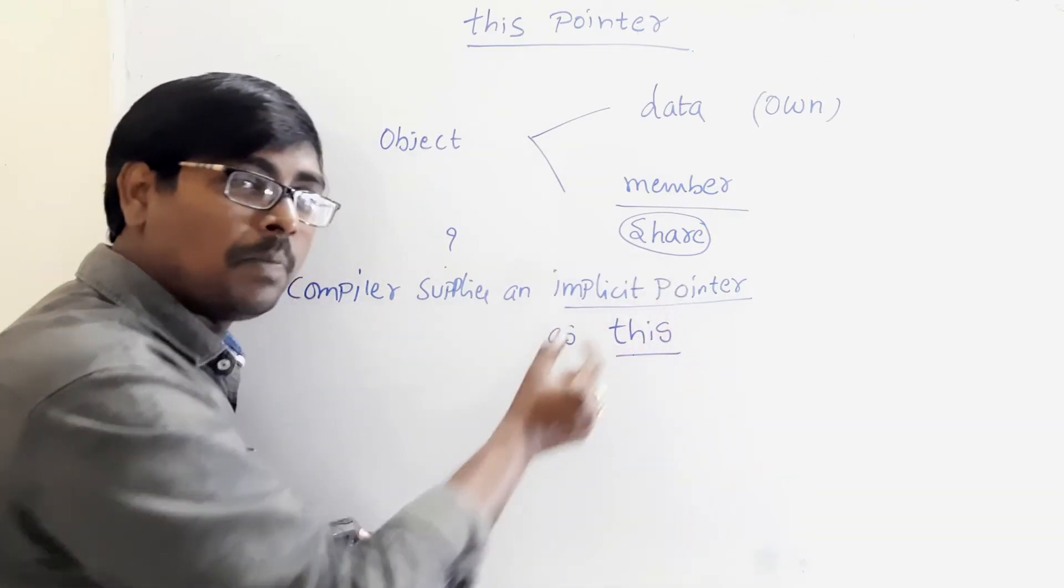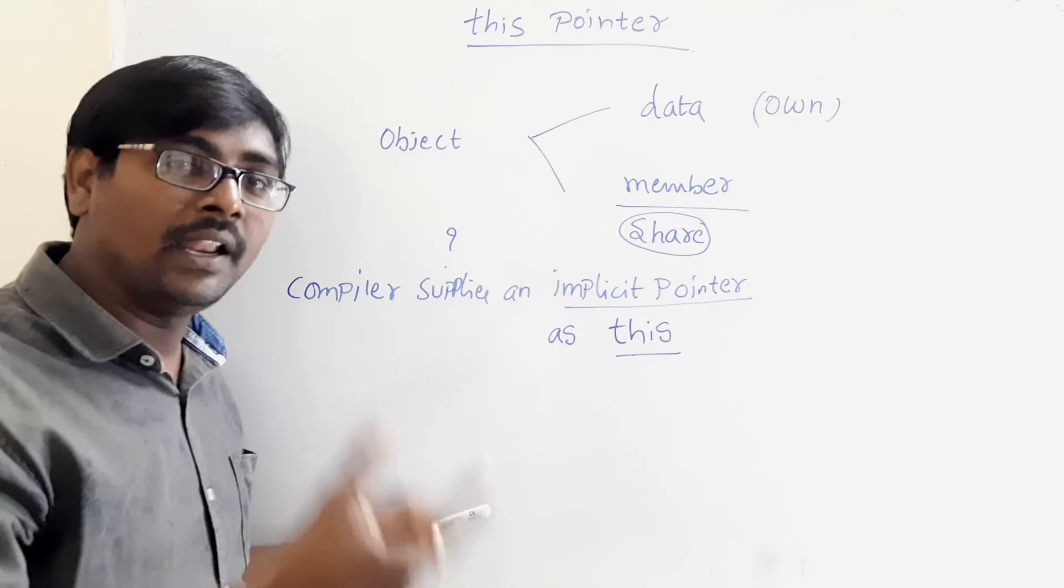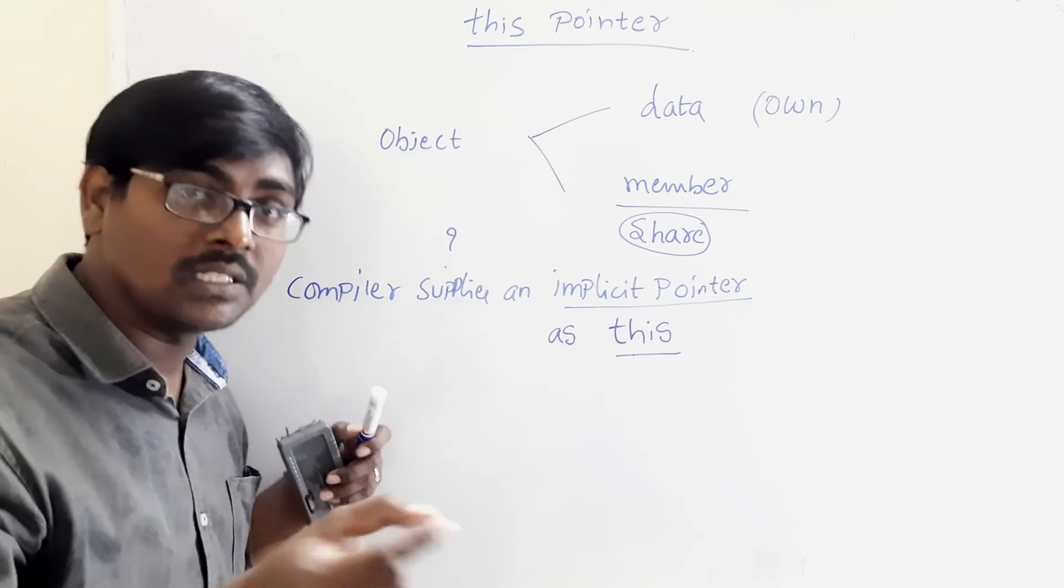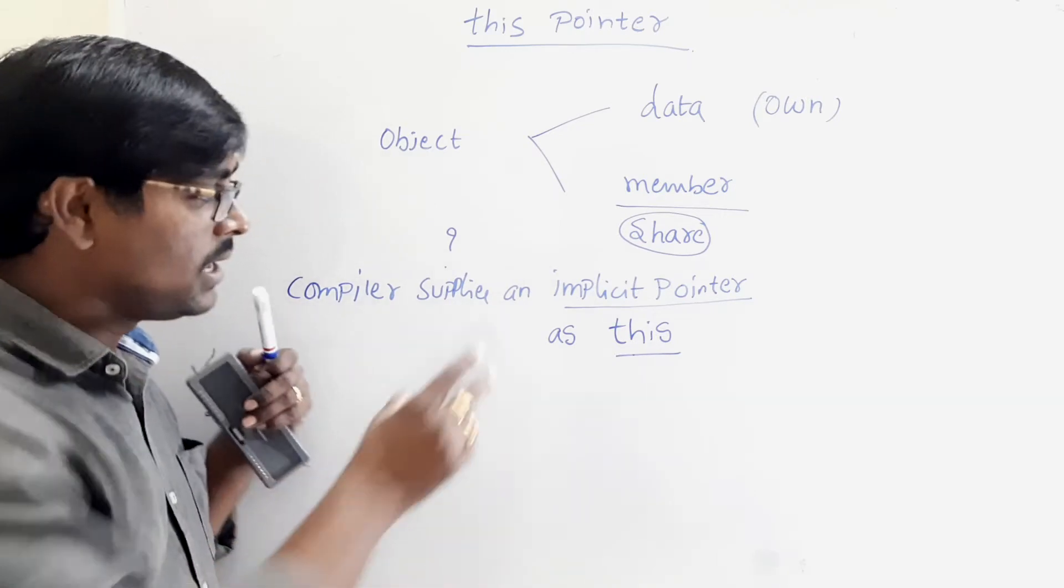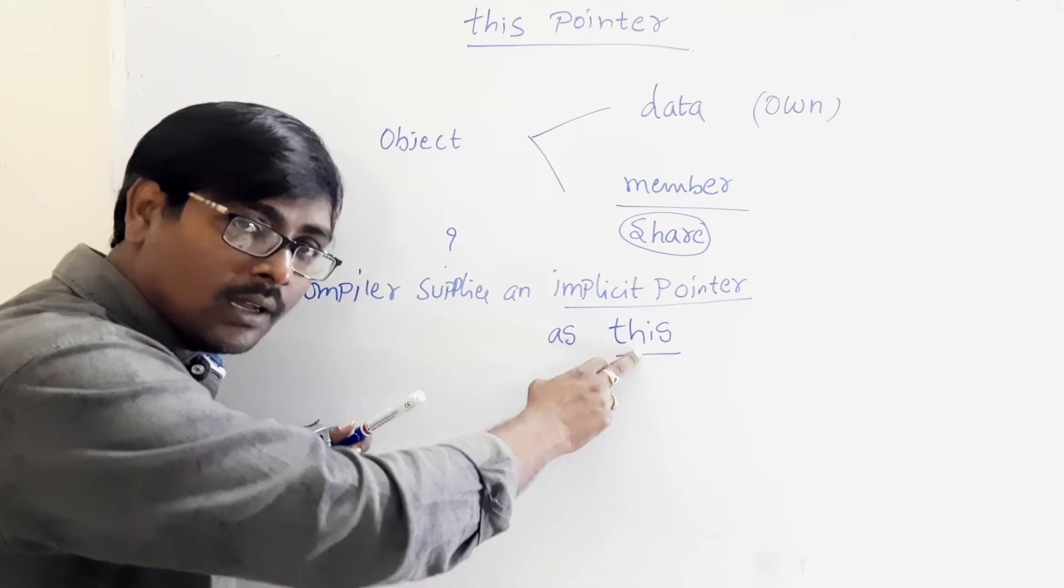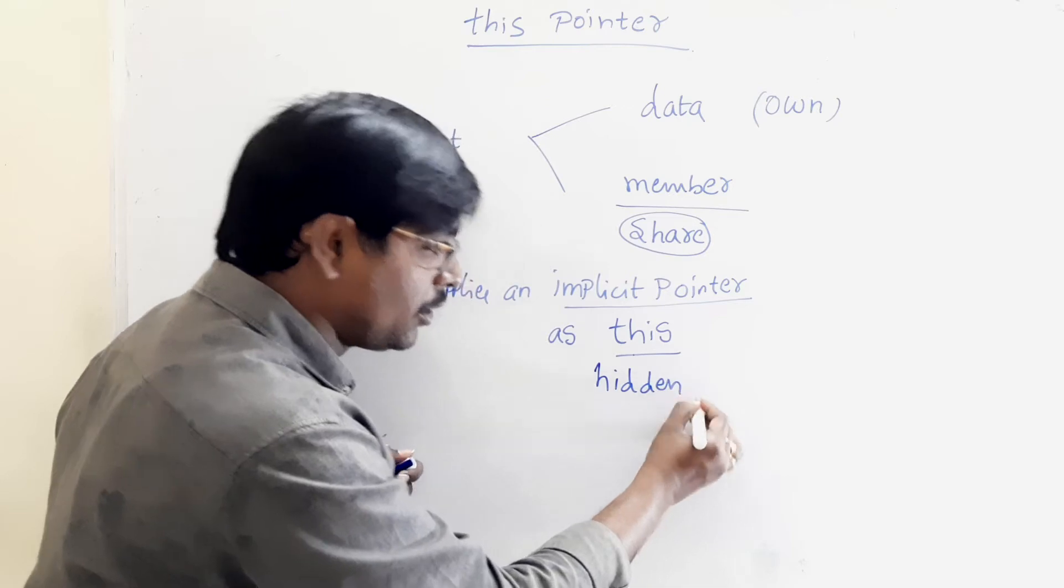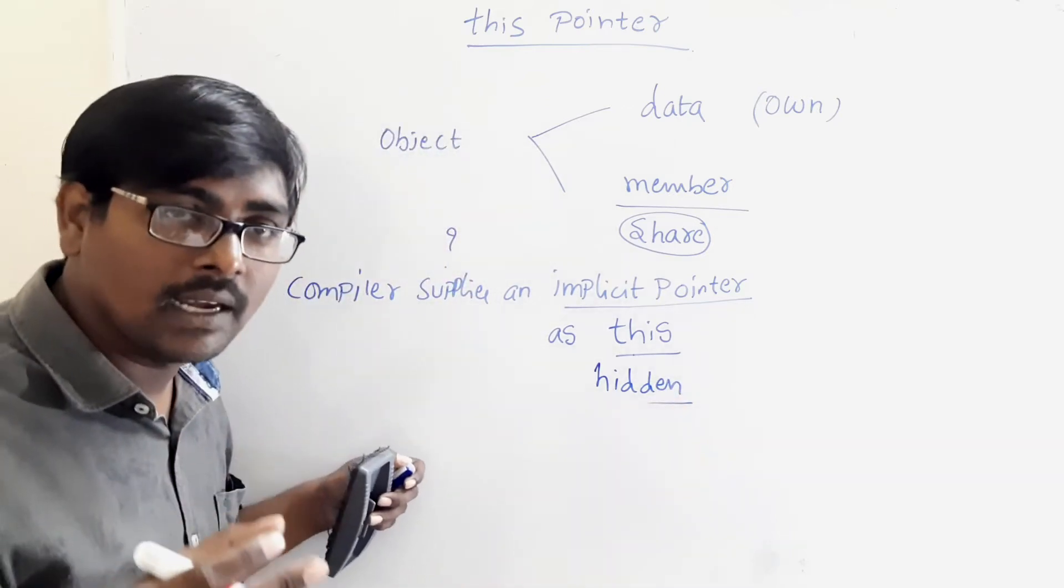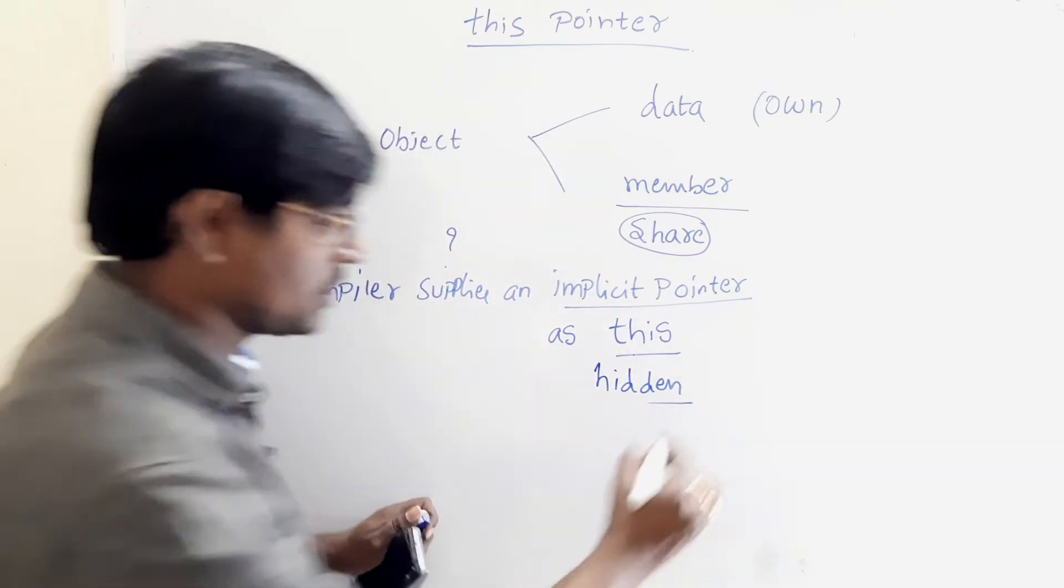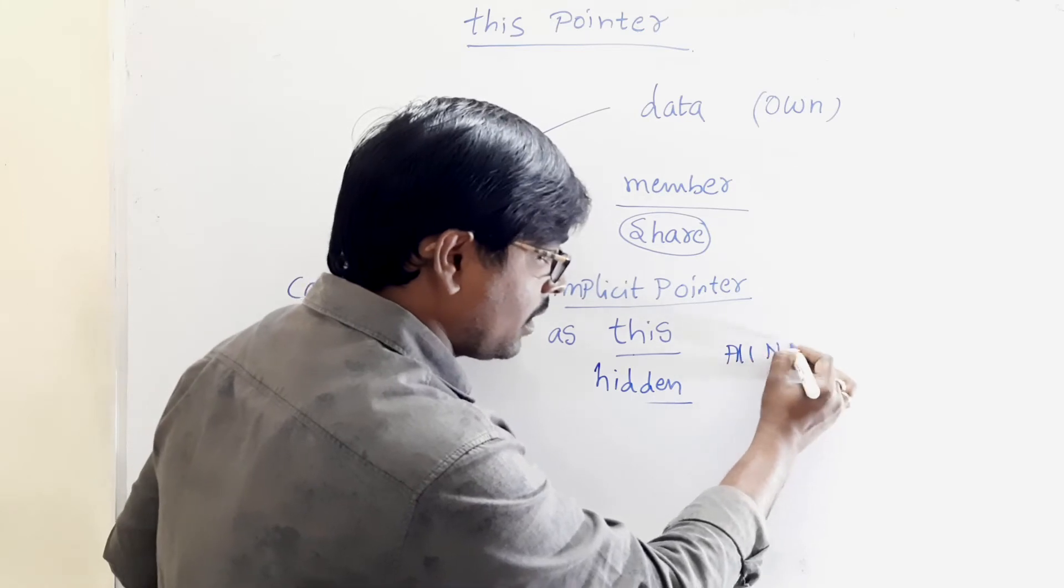The this is passed as a hidden argument. Remember, hidden means it is not visible to us. The this pointer is passed as a hidden argument to all non-static member function calls.